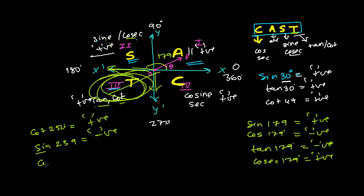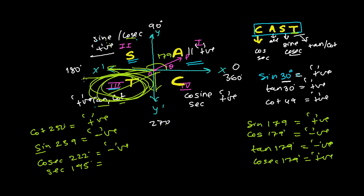If I say cosec of 222 degrees, I'll again get a negative value because cosecant is negative in the third quadrant — it should be in the second quadrant to be positive. Now if there was sec 195 degrees — 195 is just past 180, so it's in the third quadrant. But wait, secant is positive in the fourth quadrant, so sec 195 will give a negative value actually. The rule applies consistently.